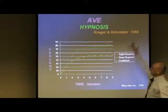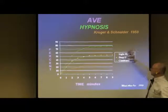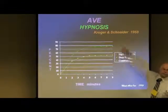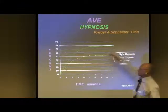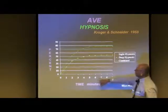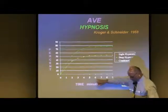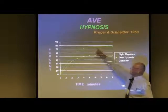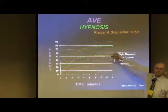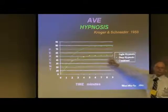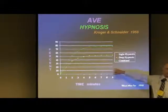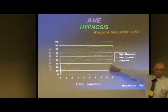First of all, we're going to look at hypnotic trances. This was Kroger and Schneider, the guys who invented the brainwave synchronizer. They found that using alpha stimulation with the synchronizer, in about six minutes, 78% of everyone they tried were in a hypnotic trance — and twice as many were in a deep trance compared to a light trance. So very fast.